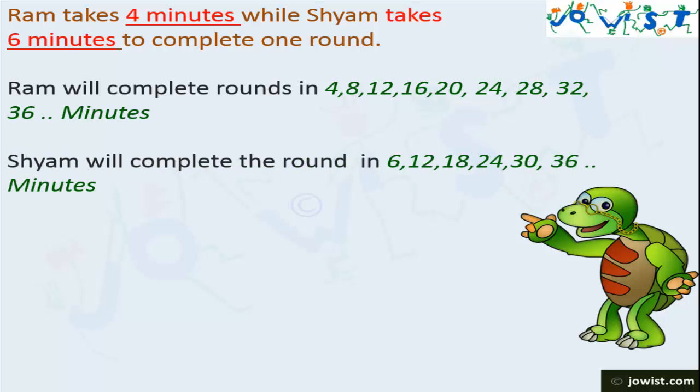Whereas Shyam will complete the first round in 6 minutes. Second round will be completed after 12 minutes. Third round will be completed after 18 minutes. Then 24 minutes, then next round will be completed after 30 minutes, then 36 minutes, and so on.